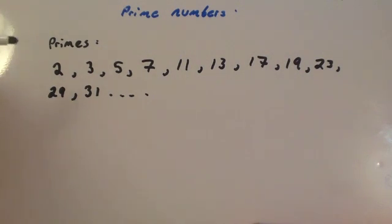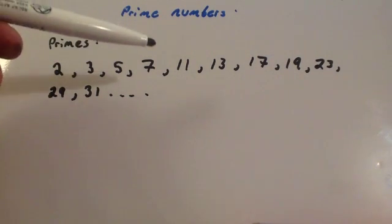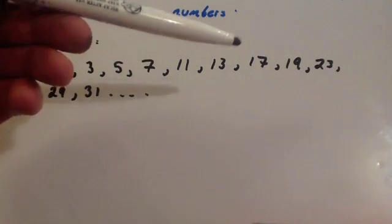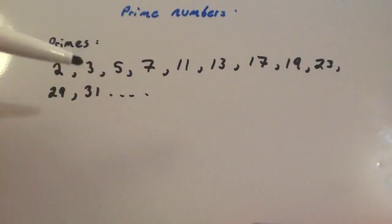So the prime numbers that I've listed up to 31 are 2, 3, 5, 7, 11, 13, 17, 19, 23, 29, 31. Let's have a look and see why.